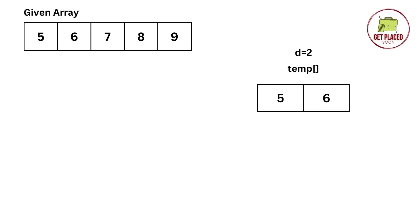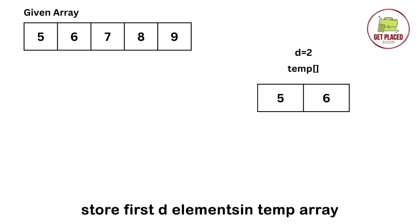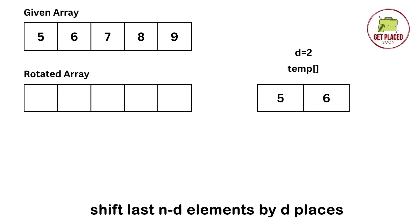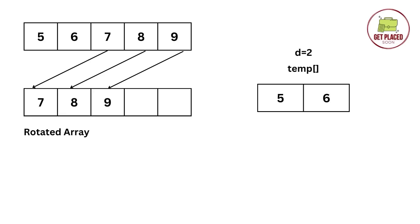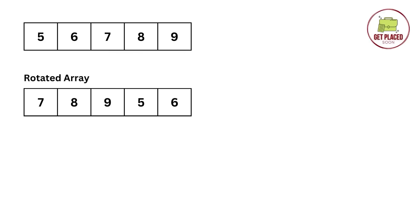The main approach is to store the first d elements in a temporary array. So for the given array, I took a temporary array and stored 5 and 6 in it. After that, we shift the last n minus d elements by d places — so 7, 8, 9 shift left by two. Then we place the temporary array elements back into the original array, giving us the rotated array: 7 8 9 5 6.